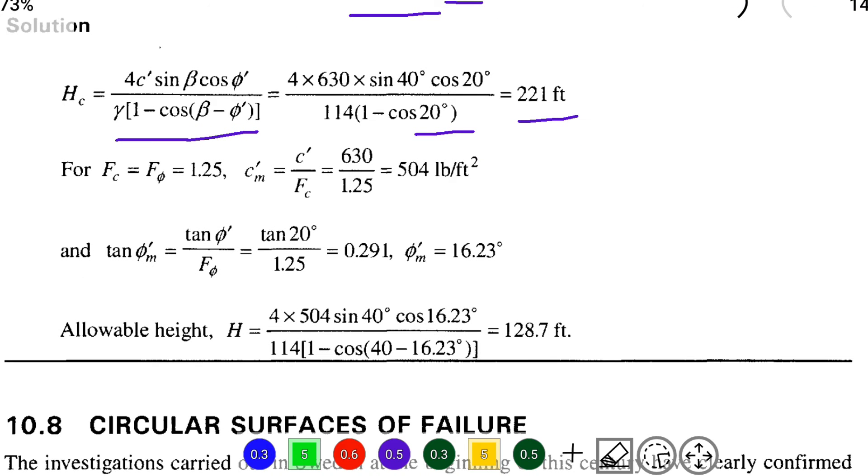For that we can find out the mobilized cohesion C_m equal to C' divided by F_c, so C' is 630 divided by F_c 1.25. Solving this we get the value of 504 pounds per square foot.